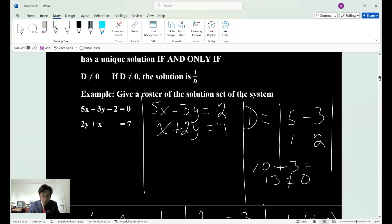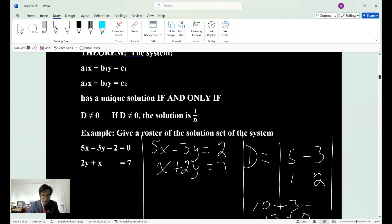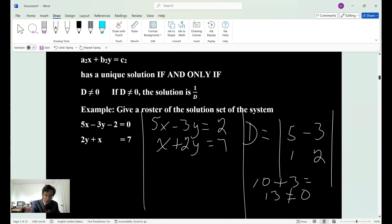So earlier we talked about this. We said to give a roster of the solution of this system. So what we do is, let's put them in customary form. This first equation can be written as 5x - 3y = 2, and then x + 2y = 7. And then we get the determinant here, which is 5, -3, and then 1 and 2, those are the coefficients. And in order for you to calculate the determinant, you're going to multiply 5 times 2 which is 10 minus 1 times -3, 1 times -3 is -3 but it's a minus so therefore it's plus. 10 plus 3 is 13. 13 does not equal zero obviously.